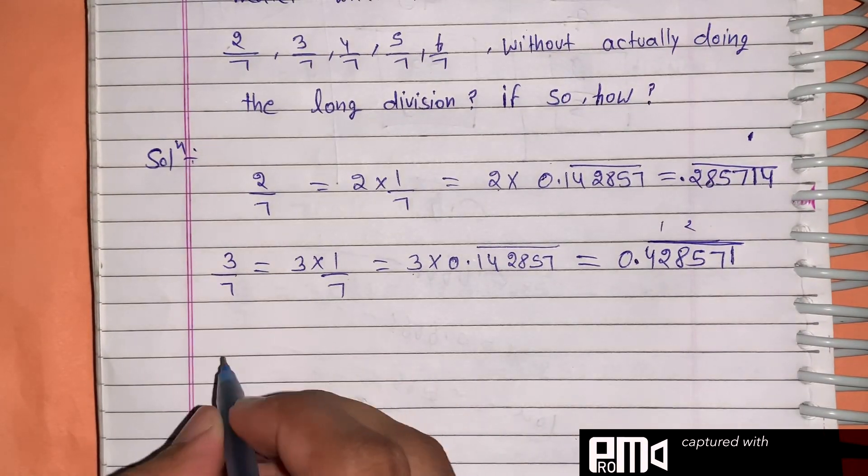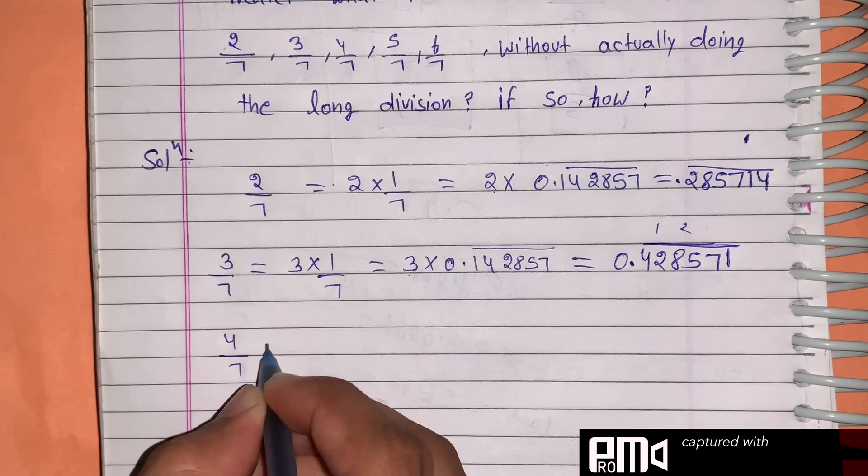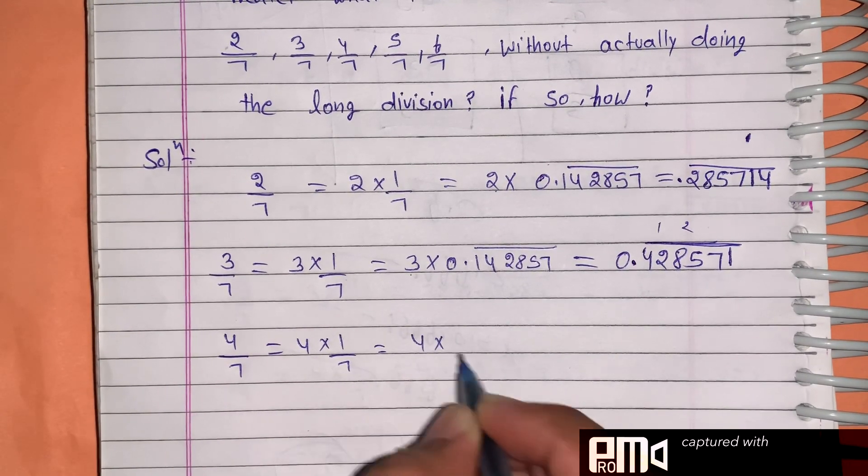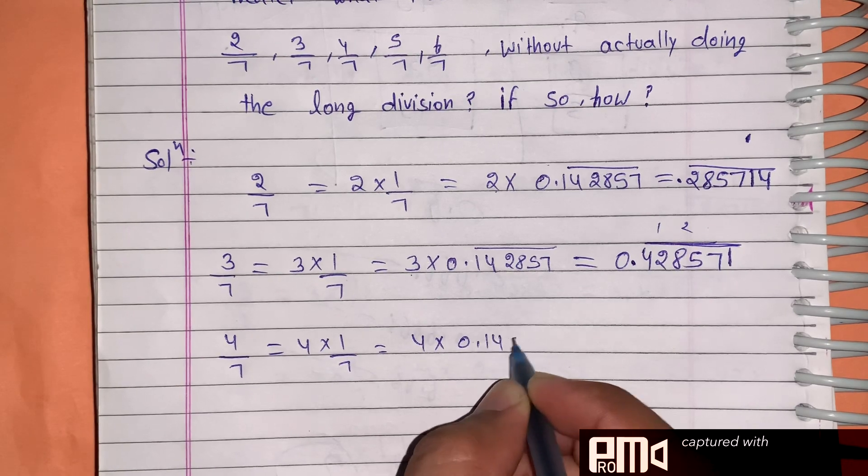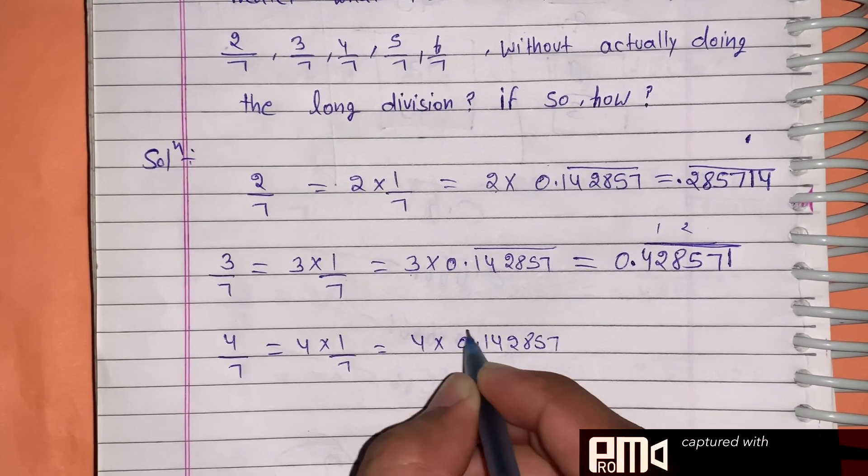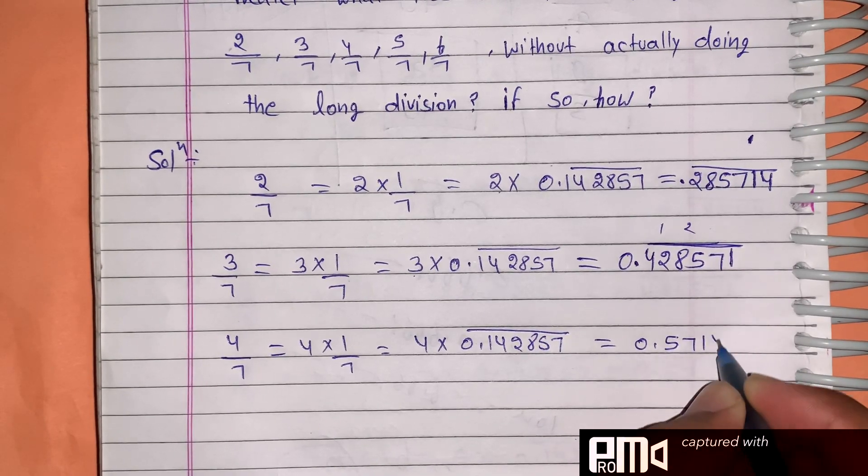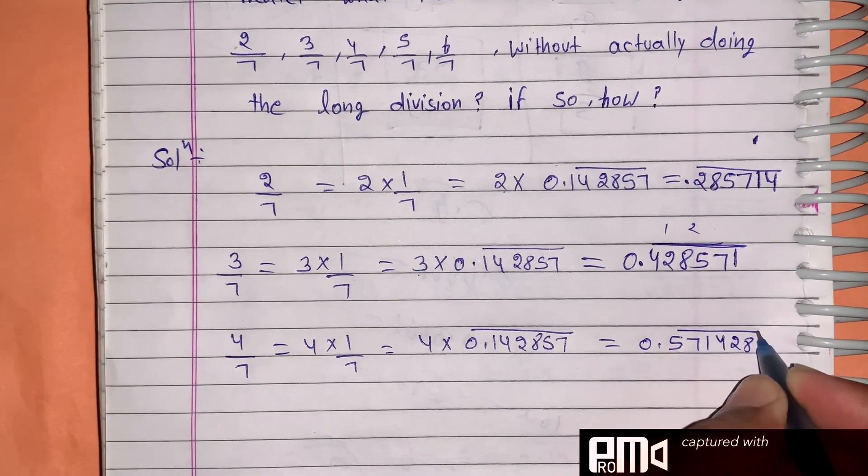We will take 4/7, which is 4 times 1/7. 4 times 0.142857 gives us 0.571428 repeating.